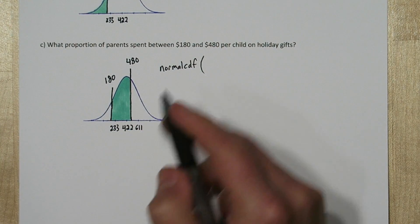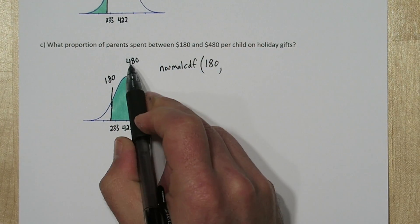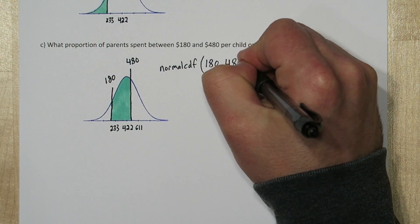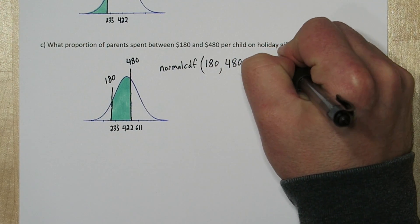So lower limit is 180. Our upper limit is 480. And we'll put in our mean and standard deviation that we already have.